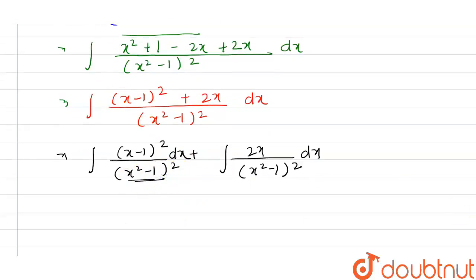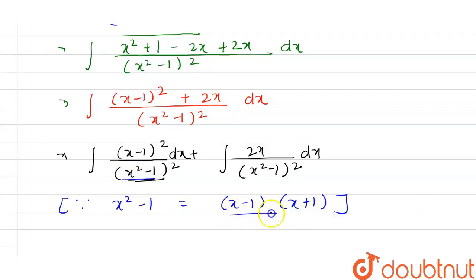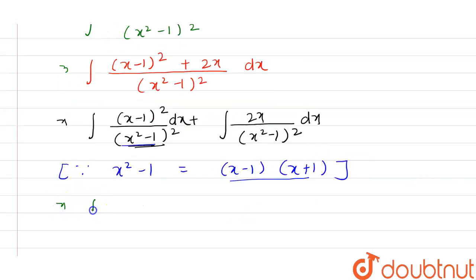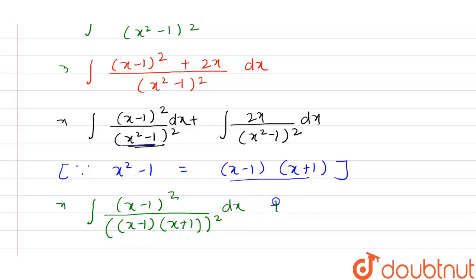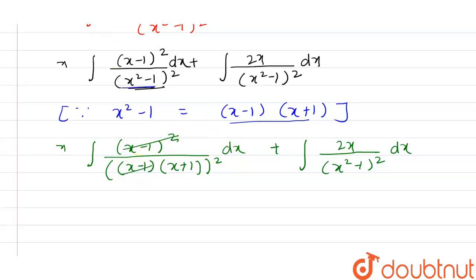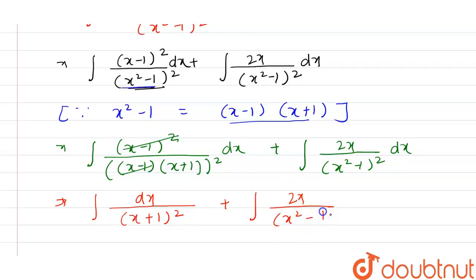From here we note that (x² - 1) can be written as (x - 1)(x + 1). Writing x² - 1 in this factored form, the (x - 1)² terms cancel, and we are left with integration of 1 / (x + 1)² dx plus integration of 2x / (x² - 1)² dx.